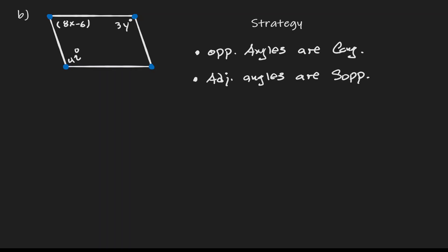Using those properties: if opposite angles must be congruent, then the angle we have here must be equivalent to the angle over here. Setting them equal to each other, we get 3y equals 42. At this point we can solve for y by dividing both sides by 3, giving y a value of 14.